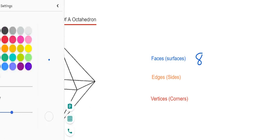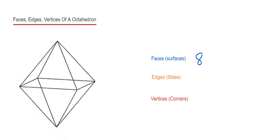Next, let's do the edges. The edges are the same as the sides, and that's where 2 faces meet. Here we can just count the lines on the octahedron. We've got 1, 2, 3, 4, 5, 6, 7, 8, 9, 10, 11, 12. So we've got 12 edges.